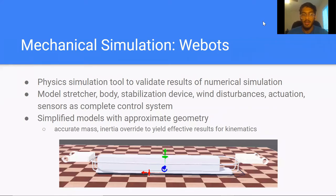We use WEBOTs as our simulation tool to validate the results of the numerical simulation. Through this, we can model our stretcher body device system as a combined robot with sensors, actuators, and approximate external wind disturbances. We imported the simplified models of our system components to satisfy WEBOTs requirements, which provided accurate results with overridden mass and inertia values.